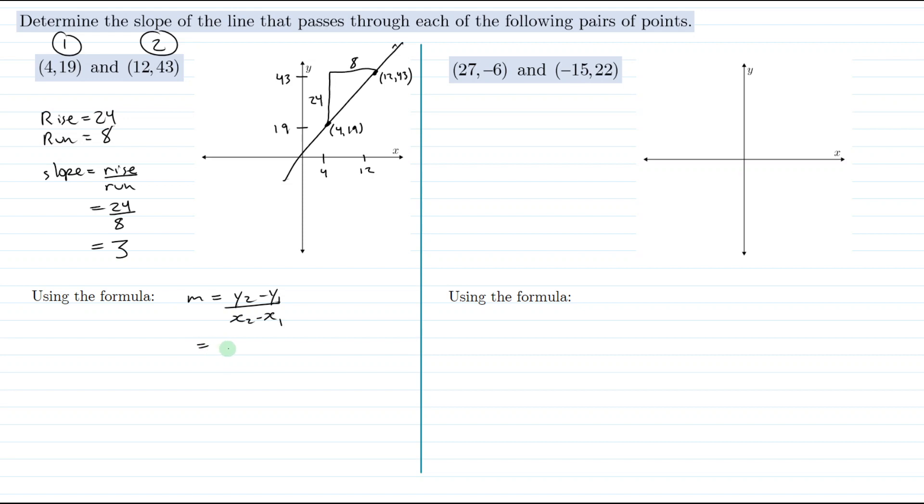So for the numerator we need to subtract the y values. We have the y value for point 2 which is 43 minus that for point 1 which is 19, over the difference in the x values. So x2 is 12 minus x1 which is 4. And again that gives us 24 divided by 8 which is 3.